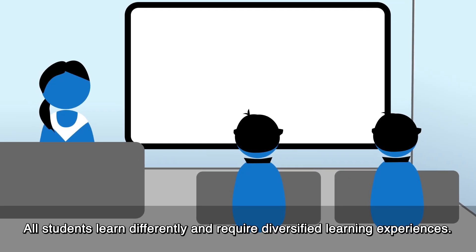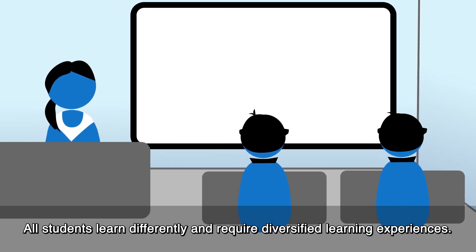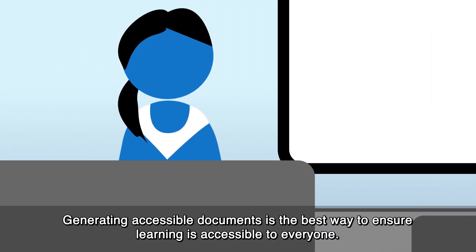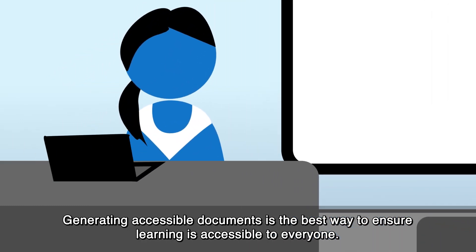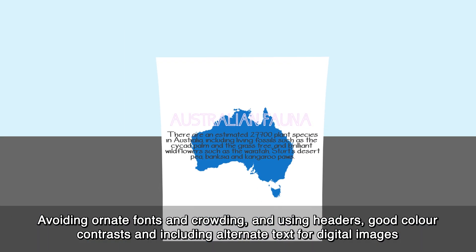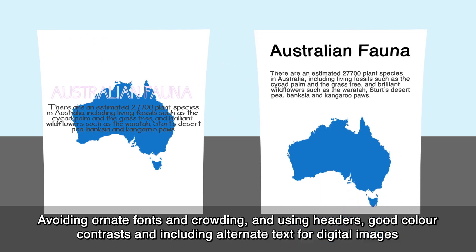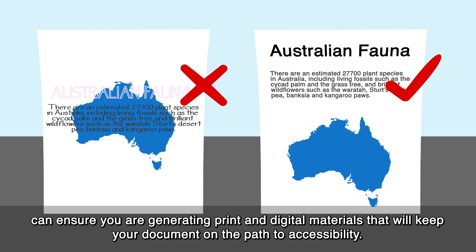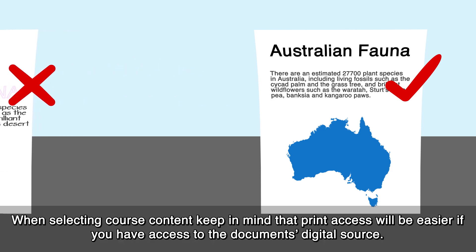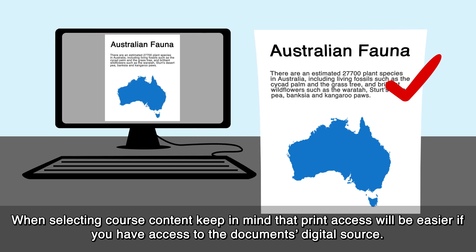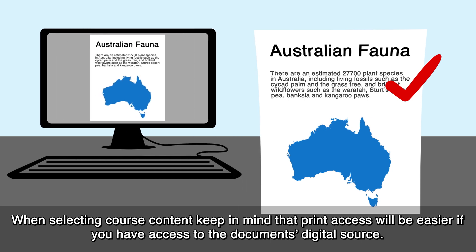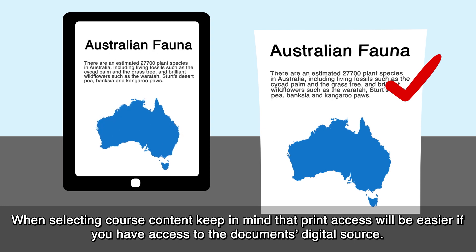All students learn differently and require diversified learning experiences. Generating accessible documents is the best way to ensure learning is accessible to everyone. Avoiding ornate fonts and crowding, and using headers, good colour contrasts and including alternate text for digital images can ensure you are generating print and digital materials that will keep your document on the path to accessibility. When selecting course content, keep in mind that print access will be easier if you have access to the document's digital source.